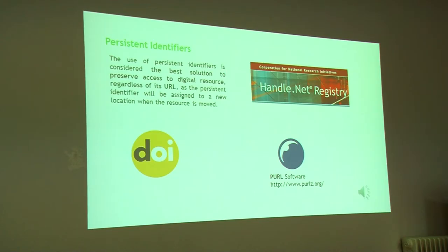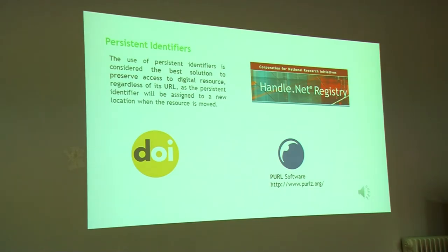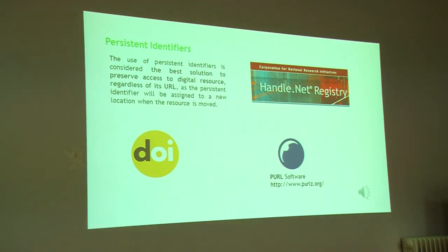Here are some examples. Handle.net registry is a service used by repositories that use the handle system, such as those with the DSpace software. The DOI system is used to identify articles. A PURL is a persistent URL that provides a permanent address to access a resource on the web. When a user accesses a PURL, they will be redirected to the current location of the resource, and to move a page, one can update the PURL and point to a new location.